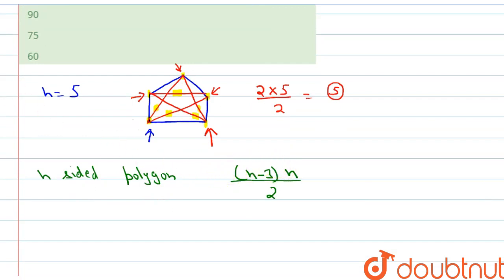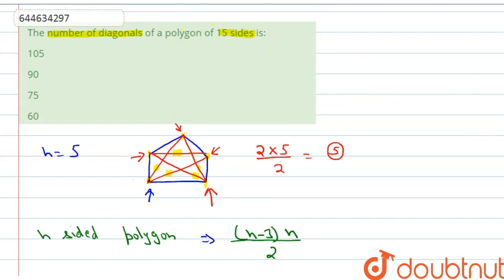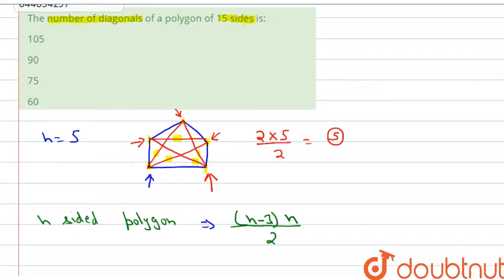Now we got a formula to find the number of diagonals in any n-sided polygon. This is the formula: n minus 3, multiply by n, divide by 2.